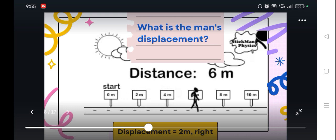So how far is the man from the starting point? From the starting point, the man is 2 meters away. And in what direction? Towards the right. So it's important that when we describe displacement, there should be magnitude and direction.